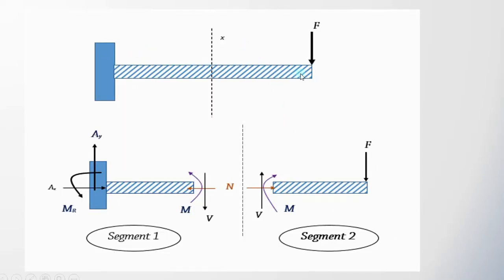If this is a cantilever beam that is fixed at one end, the other end is given a force F. If we section it at this region, we will cut the beam into two pieces. The fixed end always experiences a vertical reaction, and as you try to bend the beam down using force F, a reaction moment is also developed at that point to counterbalance the effects of this force.